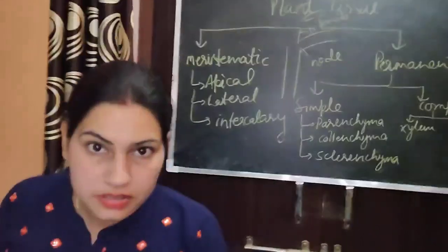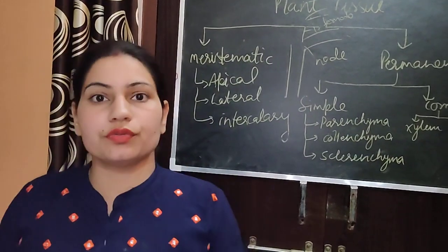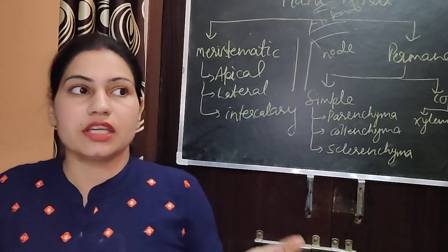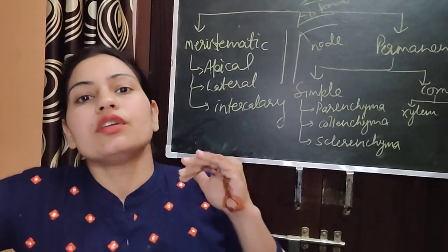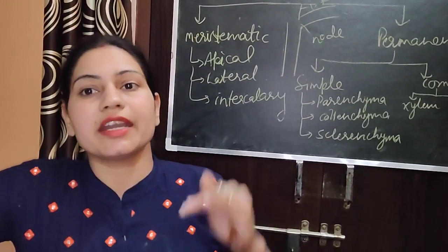Now, the functions of meristematic tissue. First, it helps in growth of the plant. The continuous division power helps the plant to grow and increase in height.